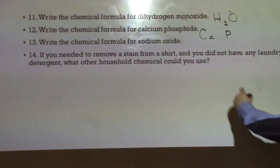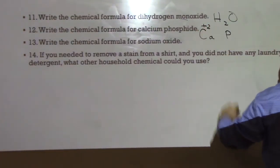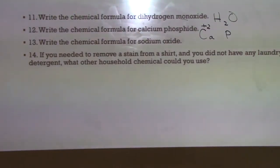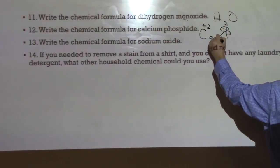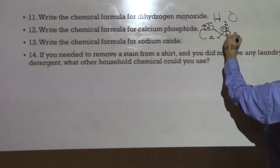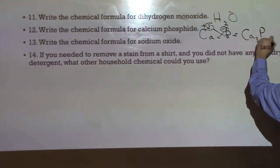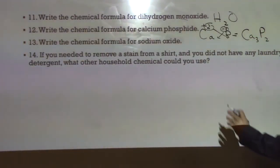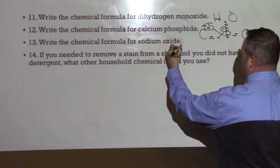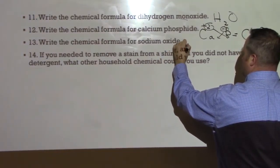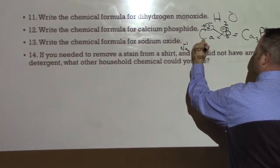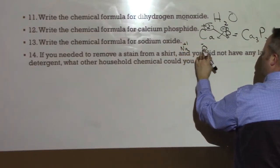Write the chemical formula for calcium phosphide. So that's going to be calcium and phosphorus. If you look at the periodic table, calcium is in group two. And phosphorus, it looks like it's in group 15, which means it has a negative three. And so again, those cross. And so we're going to get Ca3P2.